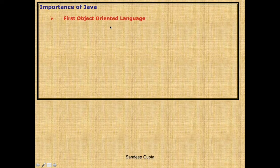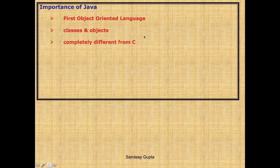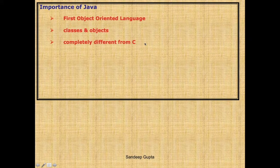So then why should we study Java? Let's understand the importance of Java. Java is very important because it is the first object-oriented language. An object-oriented language is one in which we use the concept of classes and objects. If you have done C language earlier, you have never studied classes and objects - that is why Java is completely different from C language. Java becomes the foundation of object-oriented programming.